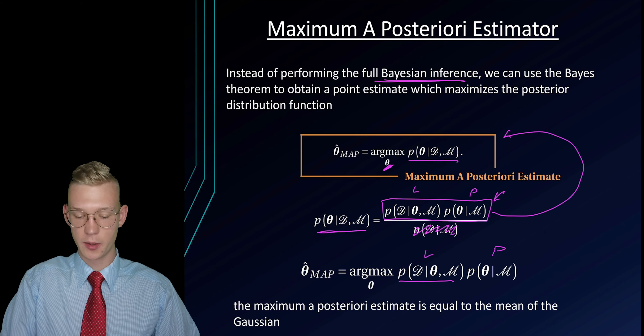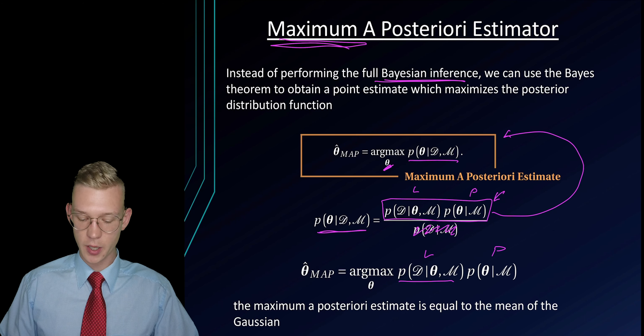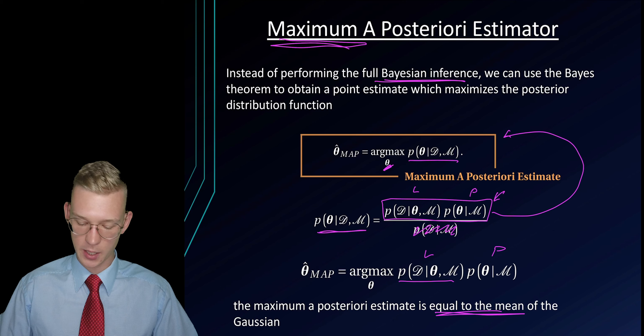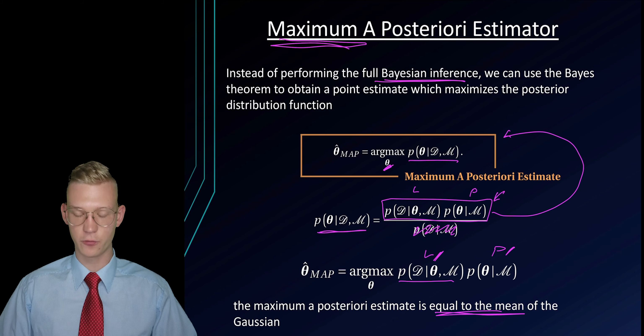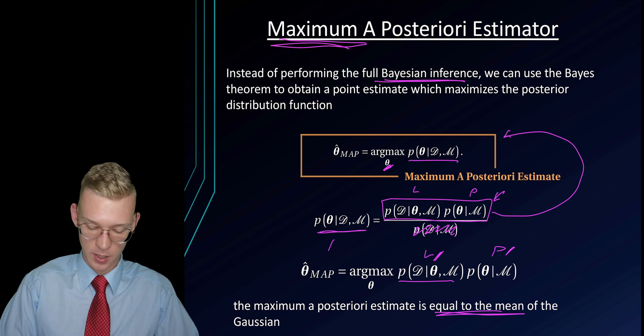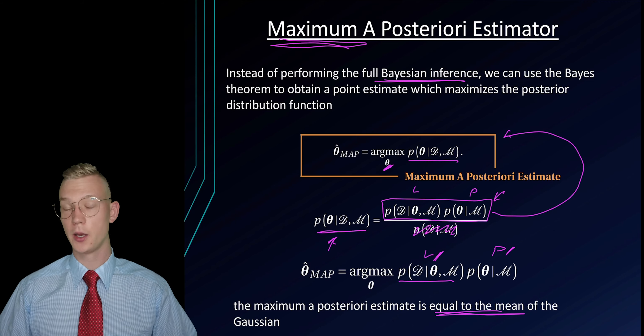If we just want the maximum a posteriori, we're just interested in the mean of the Gaussian because we know that if we propose a Gaussian for the likelihood and a Gaussian for the prior, our posterior distribution, this one right here, will also be a Gaussian.